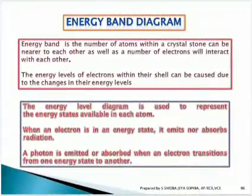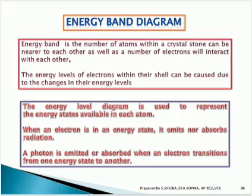Moving to another major category: the energy band diagram. We have encountered this energy band diagram concept a lot while learning physics. What is this energy band diagram and what does energy band mean? The energy band arises because the number of atoms within a crystal can be near to each other, and the number of electrons interact with each other, causing changes in the energy levels of electrons within their shells.